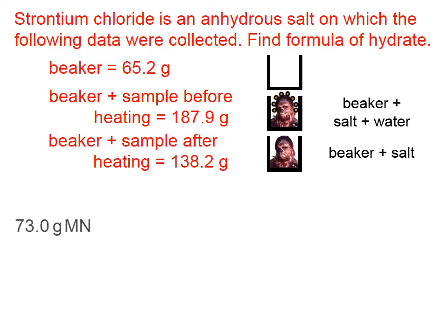Step one is to find the number of grams of salt. To do that, we take the beaker-plus-salt number and subtract the beaker, giving us 73.0 grams of salt — that's 138.2 minus 65.2. We also need the grams of water: 187.9 minus 138.2, because 187.9 is beaker plus salt plus water, and 138.2 is beaker plus salt. Beaker, salt, and water minus beaker and salt leaves us with just the water.